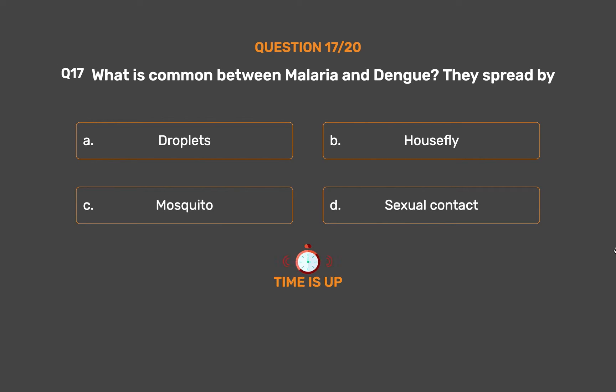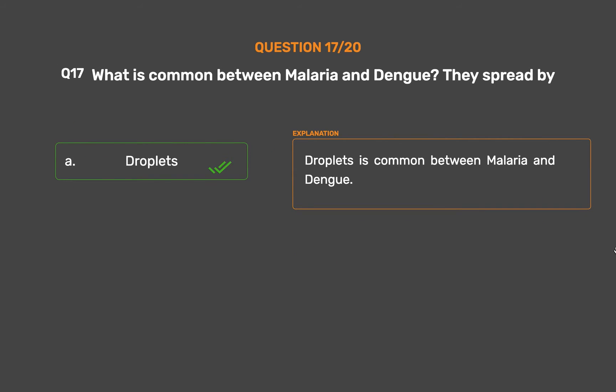The correct answer is Option A: Droplets. Droplets is common between malaria and dengue.